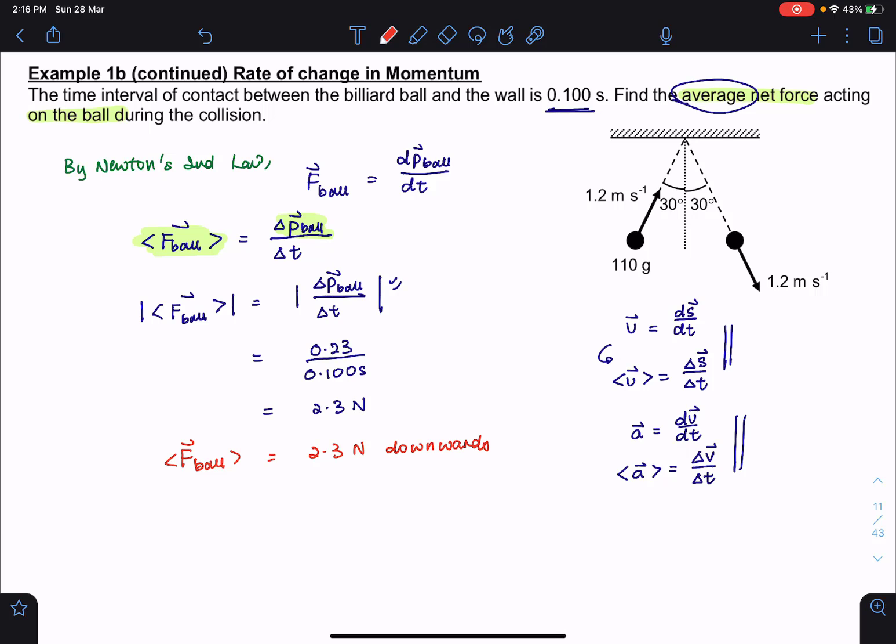And if I put it on a diagram, then it will be acting on the ball during collision. So it will be at this point and this would be the average force on the ball. And it's acting vertically downwards.